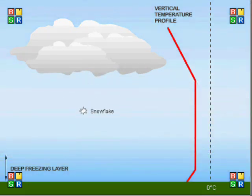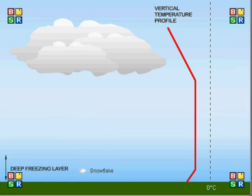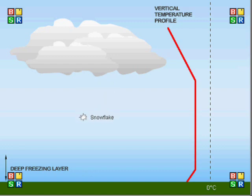Lastly, the vertical temperature profile for snow is the simplest of all. At all times during the descent of the snowflakes, they are completely within the deep freezing layer.